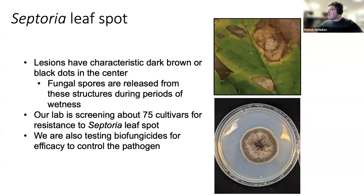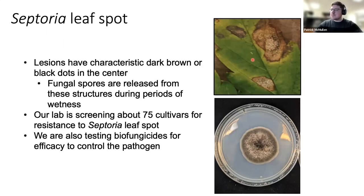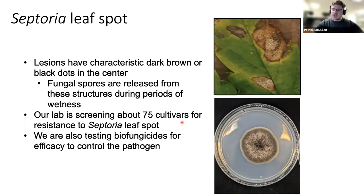Here is a close-up image of Septoria leaf spot, showing lesions with characteristic dark brown or black dots in the center, where fungal spores are contained. These are released during periods of leaf wetness, which is critical for this pathogen to spread to neighboring leaves and plants. A student in our lab is screening about 75 hemp cultivars for resistance to Septoria leaf spot and testing biofungicides for efficacy to control this pathogen.